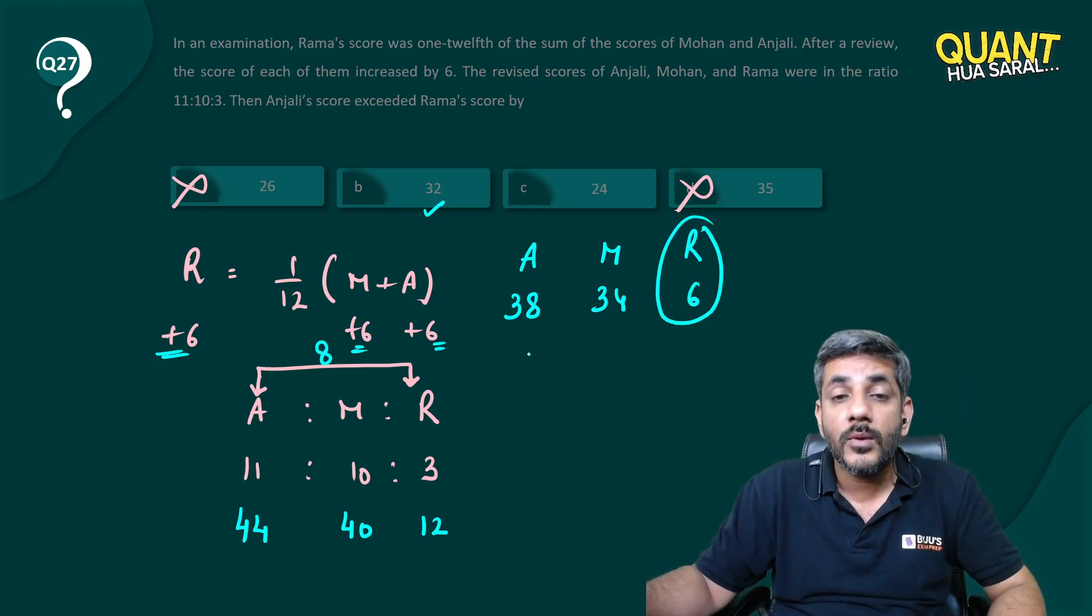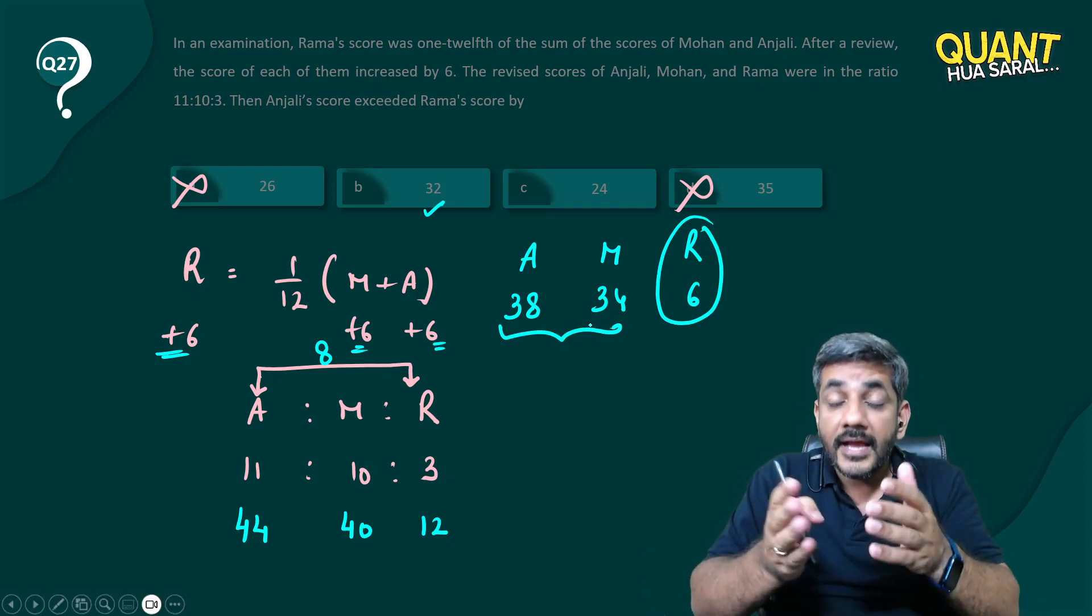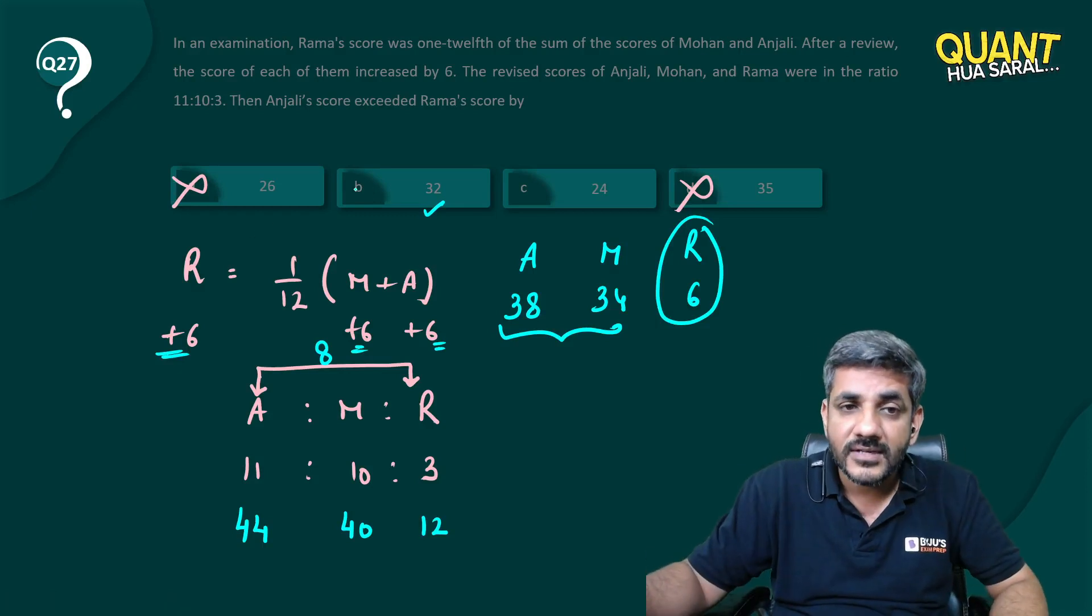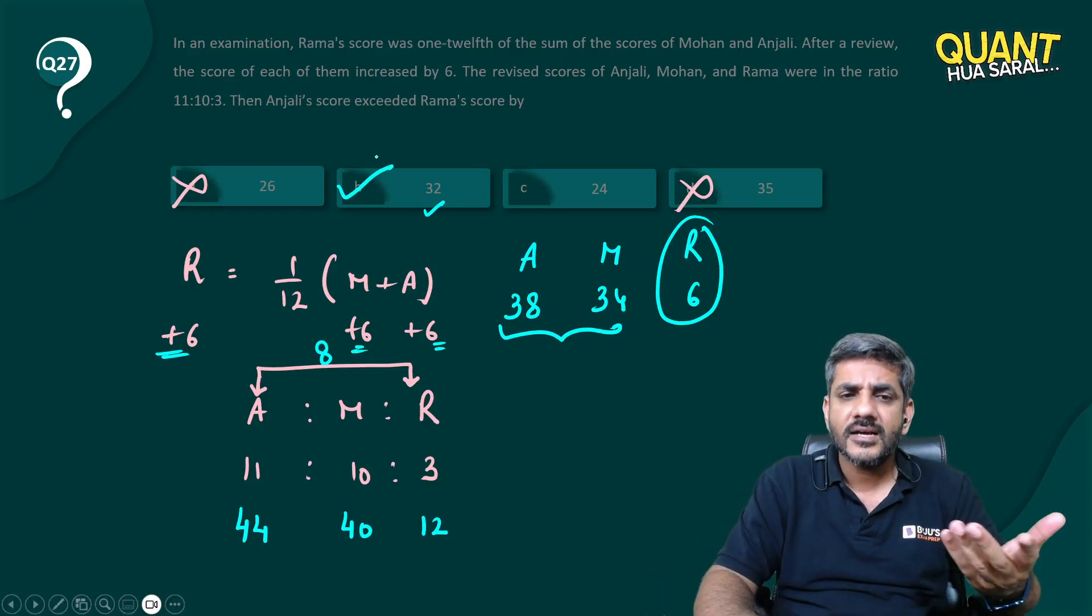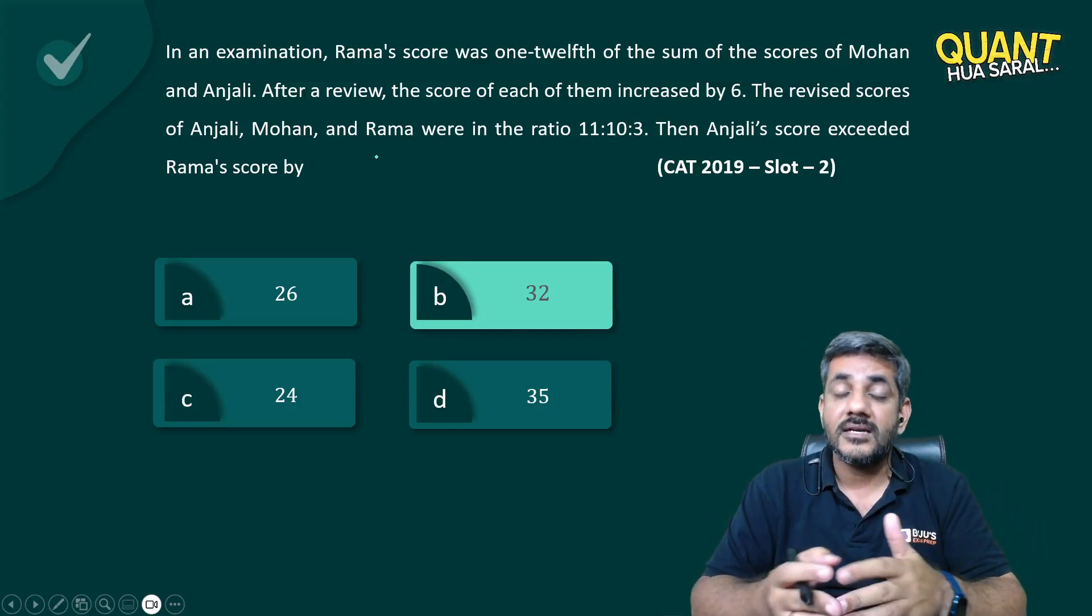And according to the question, Rama's score should be 1/12th of the sum of their scores. What is the sum of their scores? It is 72. And exactly, 6 is 1/12th of that. So because it is satisfying, straight away I can say 32 is the correct answer for this question. That's what we call aptitude.